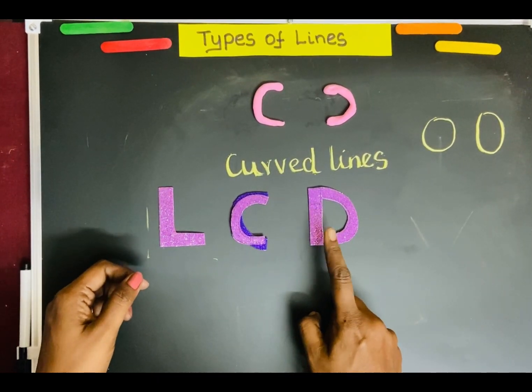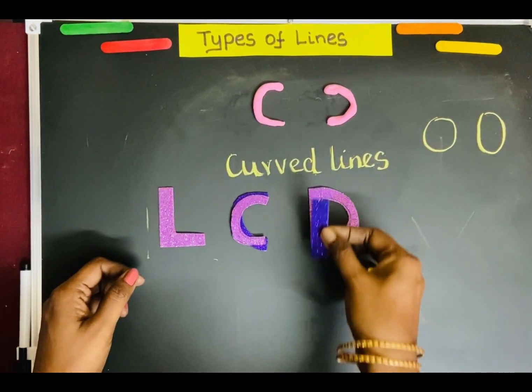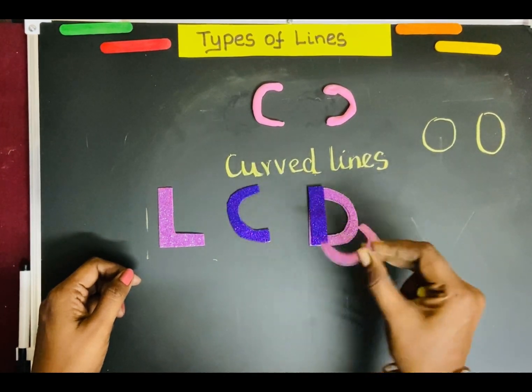Look at the letter D. Letter D is made by straight lines and curved lines.